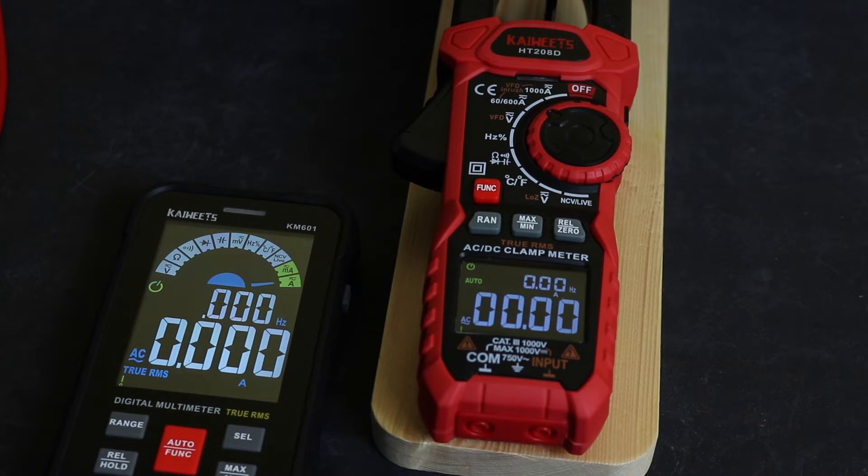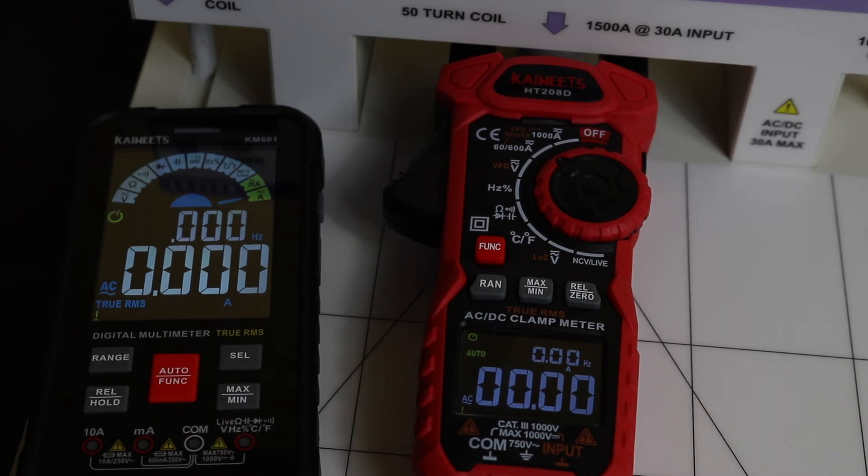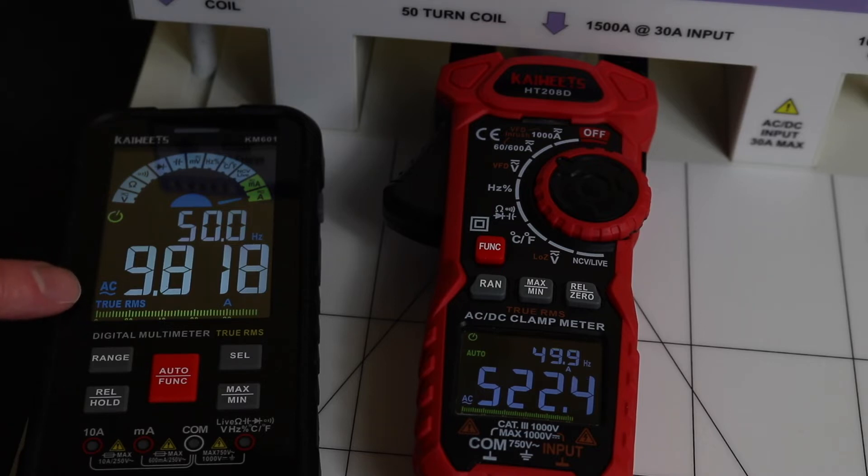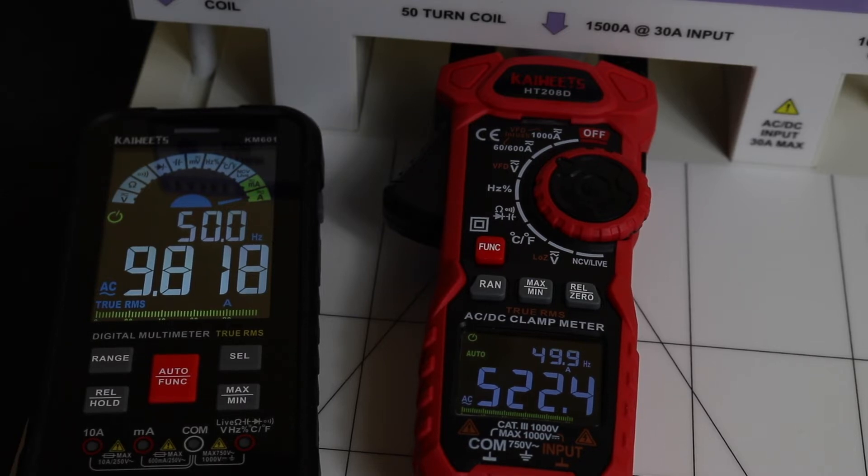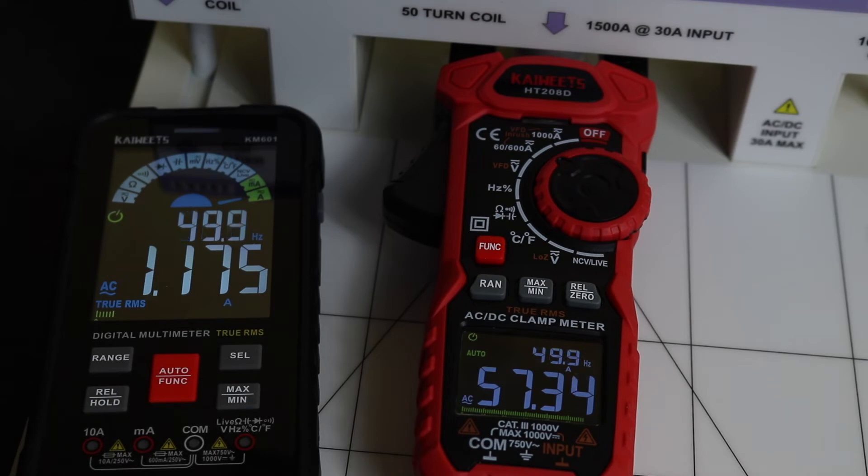We've reset everything and we're on our current clamp table now. We're on the 50 turn coil. I can leave the KM601 in for the first test because I just put 10 amps in, which should be giving me 500 amps out on the instrument. You can see I've got 9.813 and we're on 522.4 amps, which is quite a bit above the expected 500 amps. What I will just do is take this back to the range setting, so 1.2 amps. This is 1.2 amps being injected which times 50 should give me 60 amps.